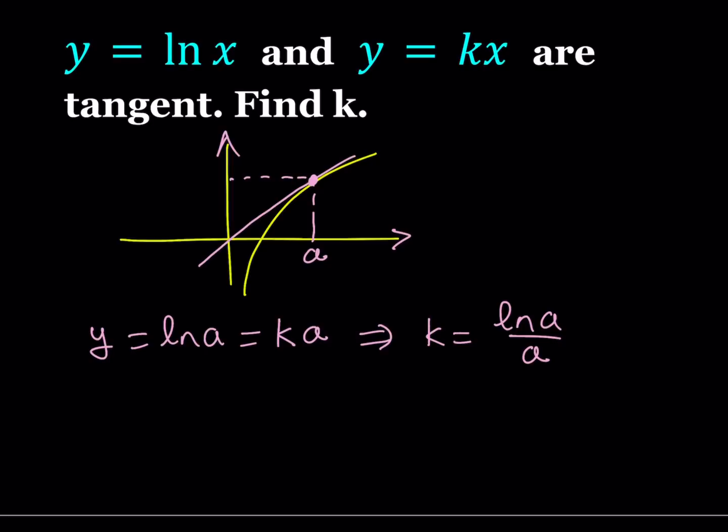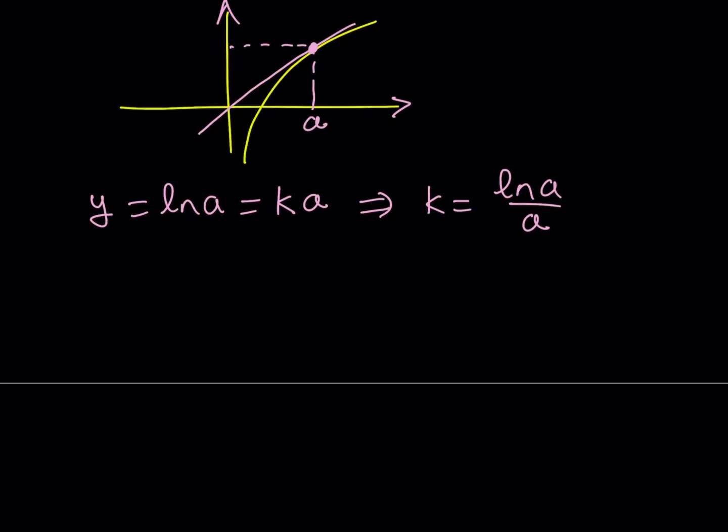Now, when the line y equals kx is tangent to the graph of y equals ln x, then the slope of the tangent, which is given by the derivative, the slope of the tangent is basically equal to the derivative at a.